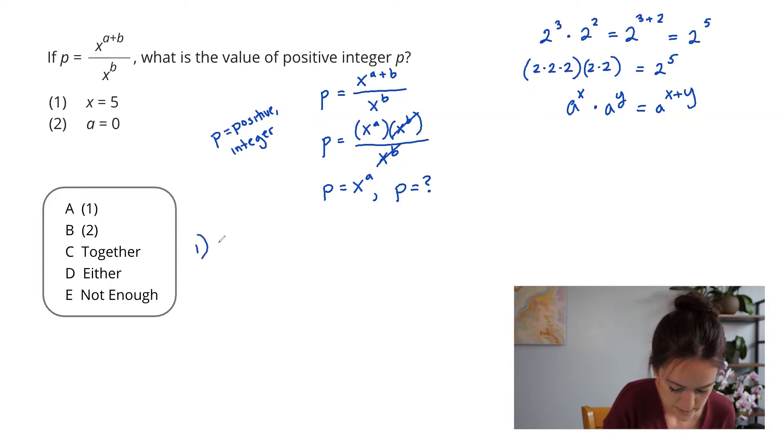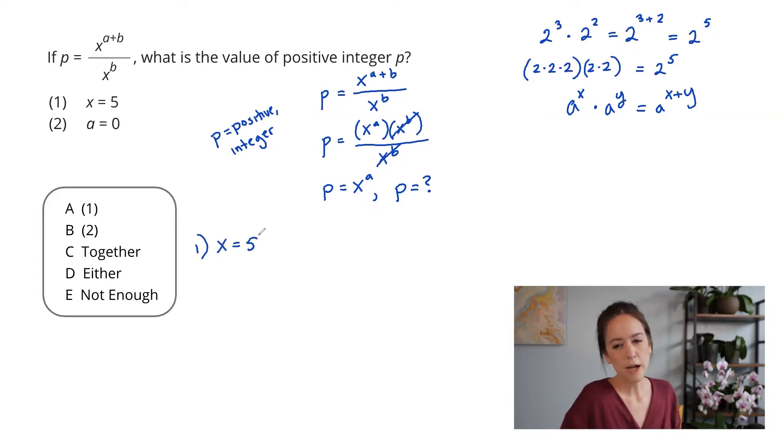Alright. So statement one tells me that x is five. And another trap I see a lot of folks fall into is that they see this and they think, oh, there's no way this is sufficient. I'm going to move right along to statement two and then combining them. And that would be another huge mistake here.